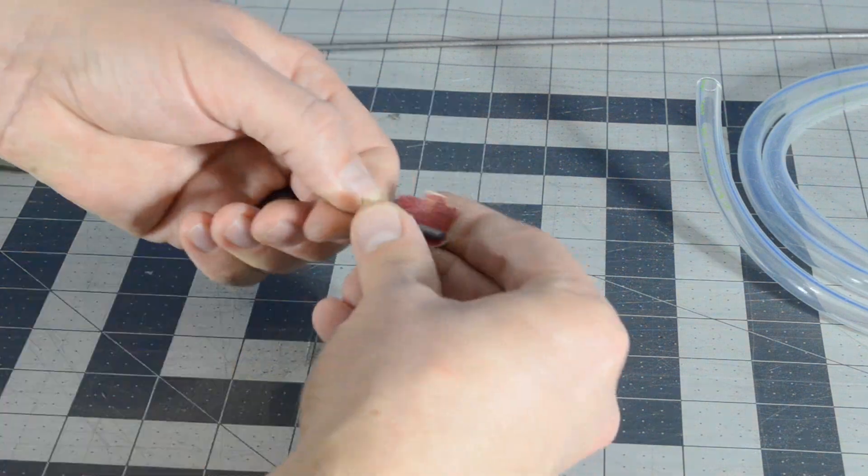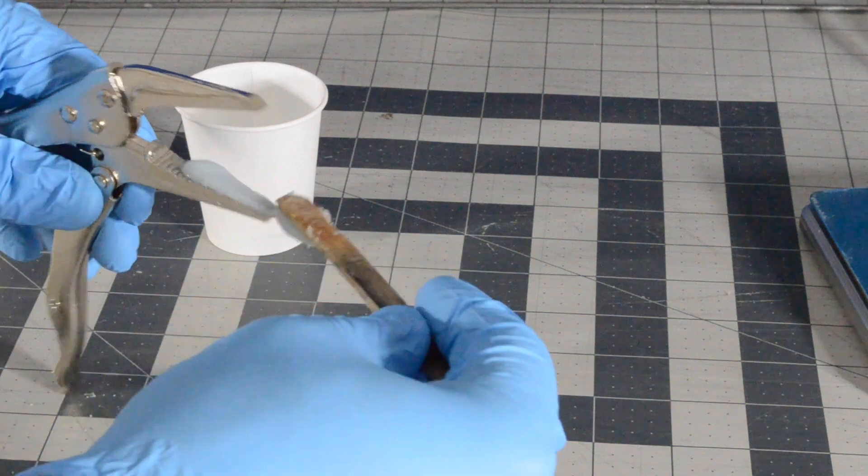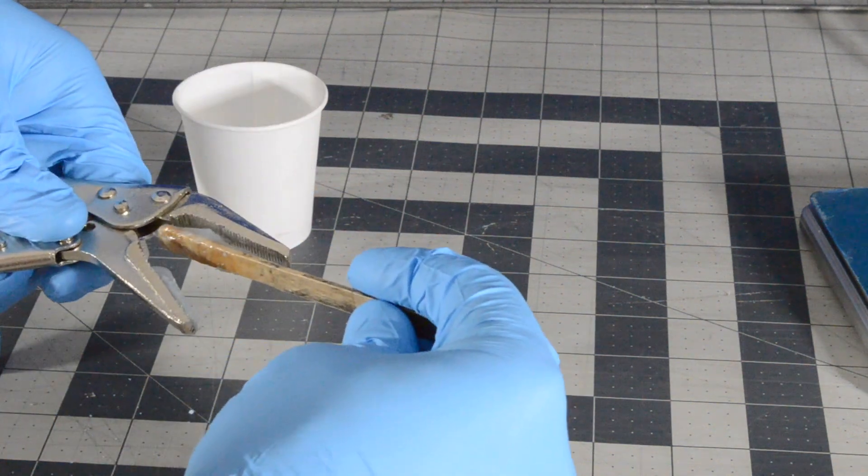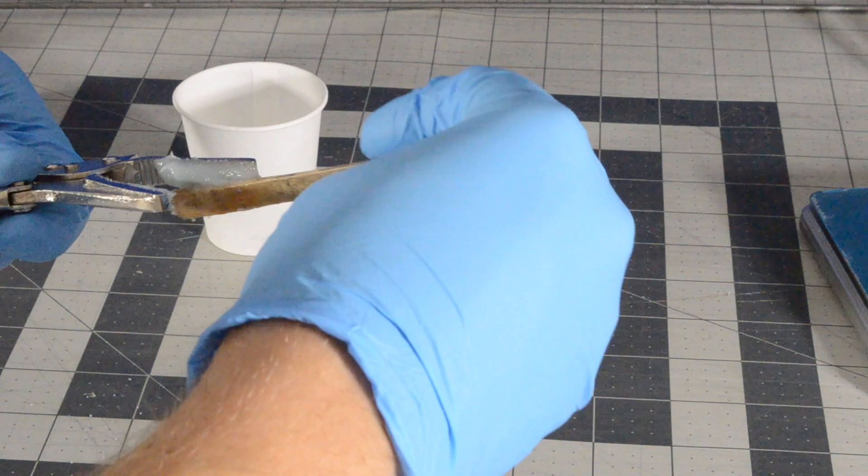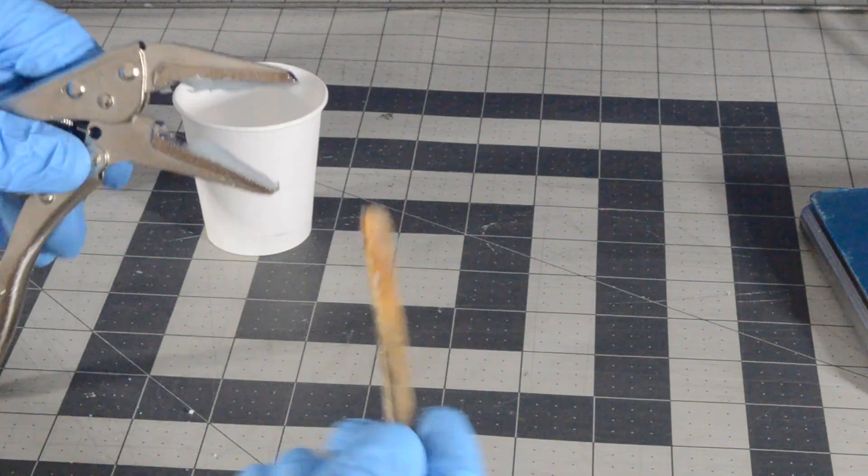I roughed up all the surfaces I was gluing, and I mixed up some epoxy with some cabosil, and I glued the rods in place. It's like putting toothpaste on a toothbrush. A very sticky toothpaste on a very toothy toothbrush.